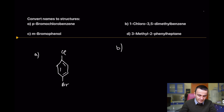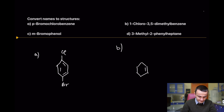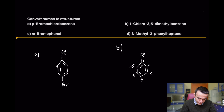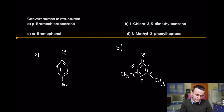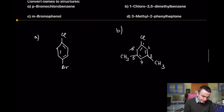Compound B: benzene is again the parent name. At position 1 is chloro; at position 3 you have a methyl group; and at position 5 you have another methyl group. Because you have two methyl groups, this is 1-chloro-3,5-dimethylbenzene.